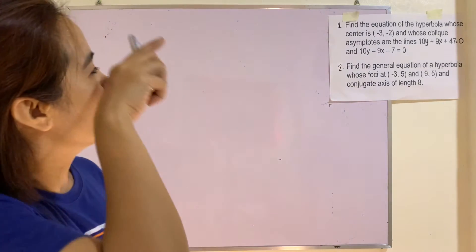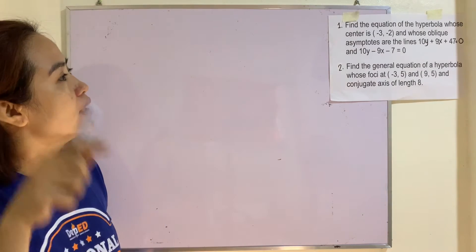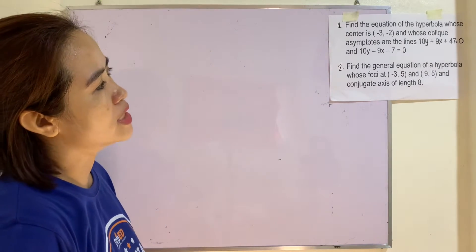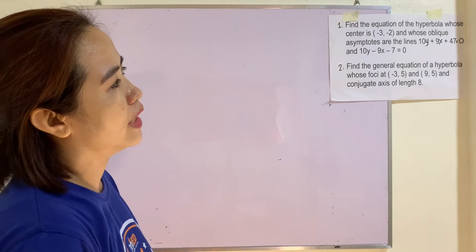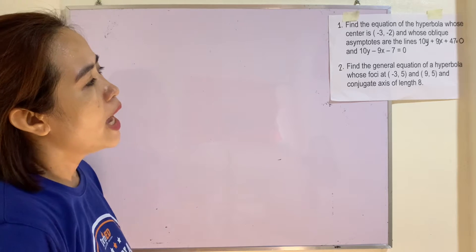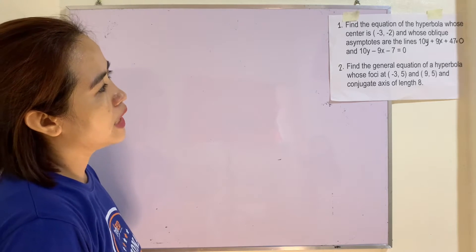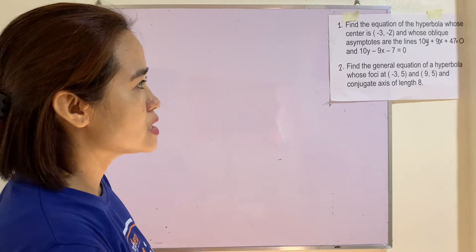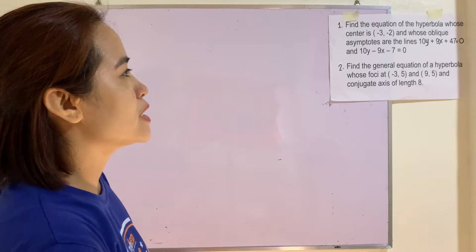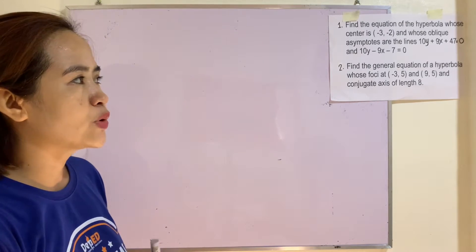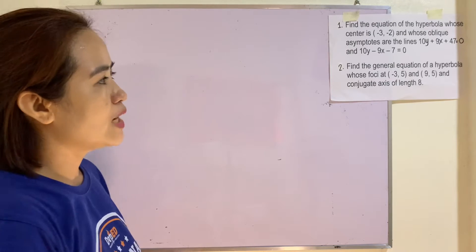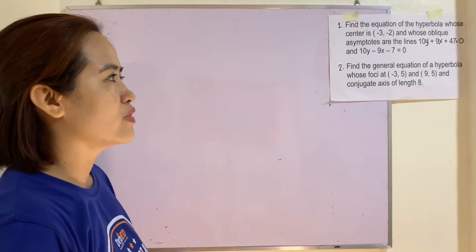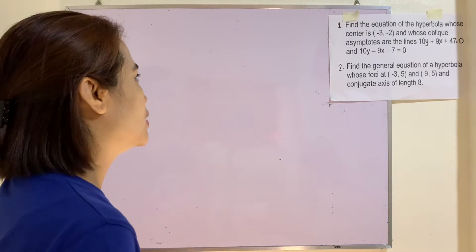Example 1: Find the equation of the hyperbola whose center is negative 3, negative 2, and whose oblique asymptotes are the lines 10y plus 9x plus 47 equals 0, and 10y minus 9x minus 7 equals 0.